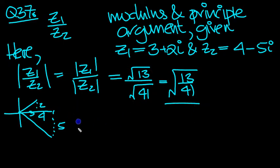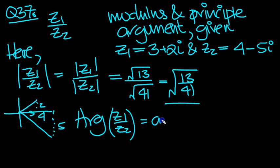Now the argument, so use the formula. Arg of z1 over z2 is equal to the principal argument of z1, take away the principal argument of z2.